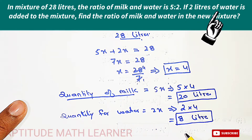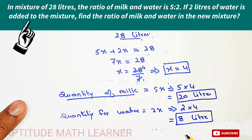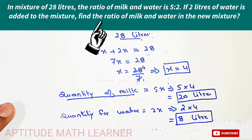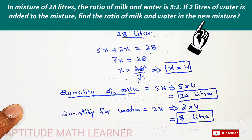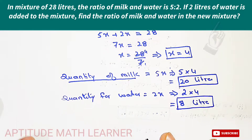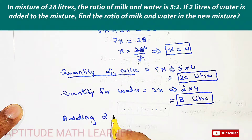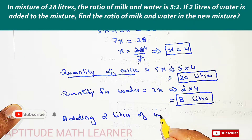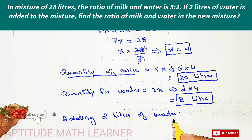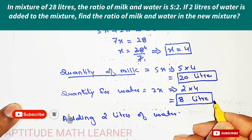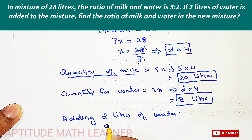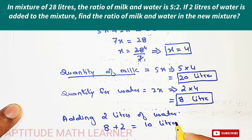The question says 2 liters of water is added to the mixture. So the present water is 8 liters, and we add 2 liters more, giving us 10 liters of water in the new mixture.